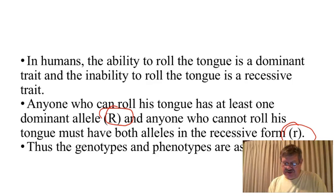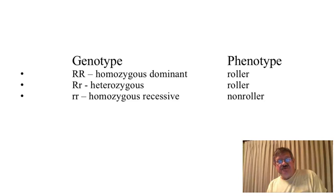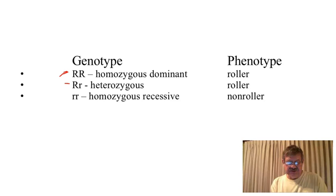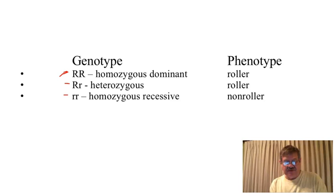You have two copies of this recessive allele. Here are the possible genotypes associated with being able to roll the tongue. You can be big R big R, big R little r — which is called heterozygous — or little r little r, homozygous recessive. If you have at least one copy of this dominant allele, you are a roller. If you cannot roll your tongue, you are homozygous recessive.